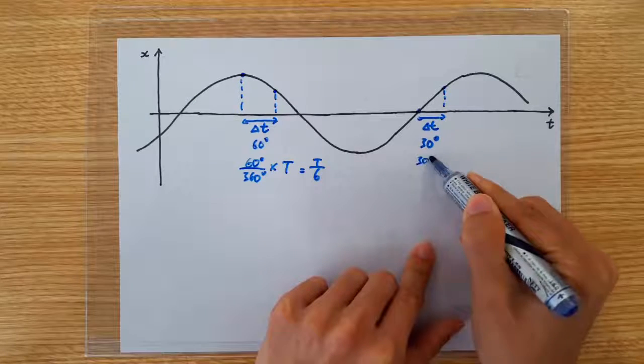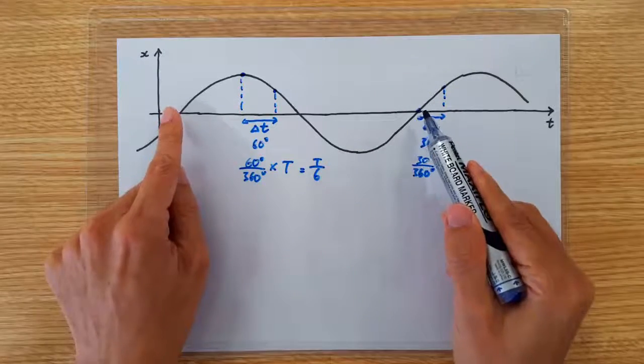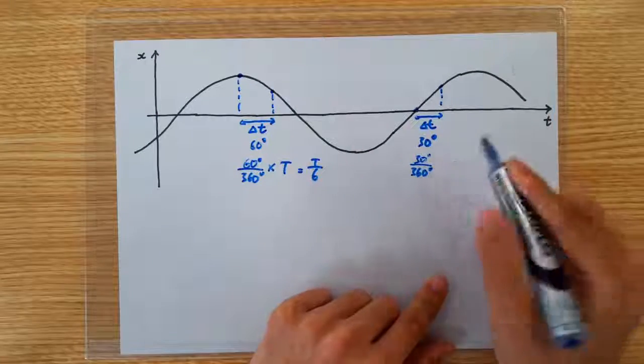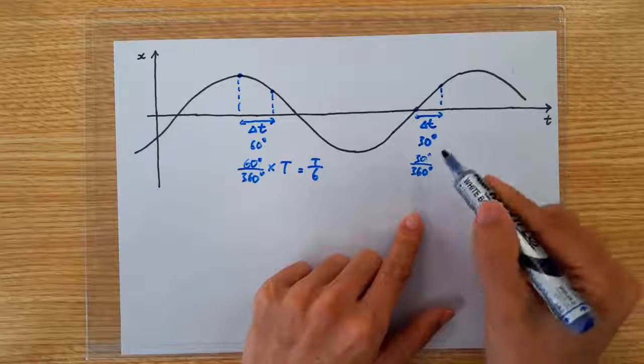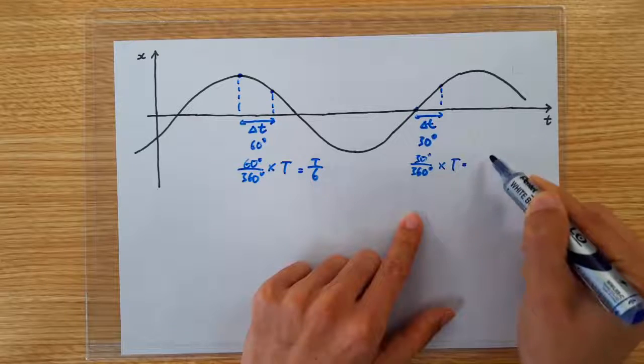Which means this should correspond to 30 out of 360 degrees. Remember one period corresponds to 360 degrees. So this corresponds to one twelfth of a cycle, which means this amount of time is one twelfth of a period.